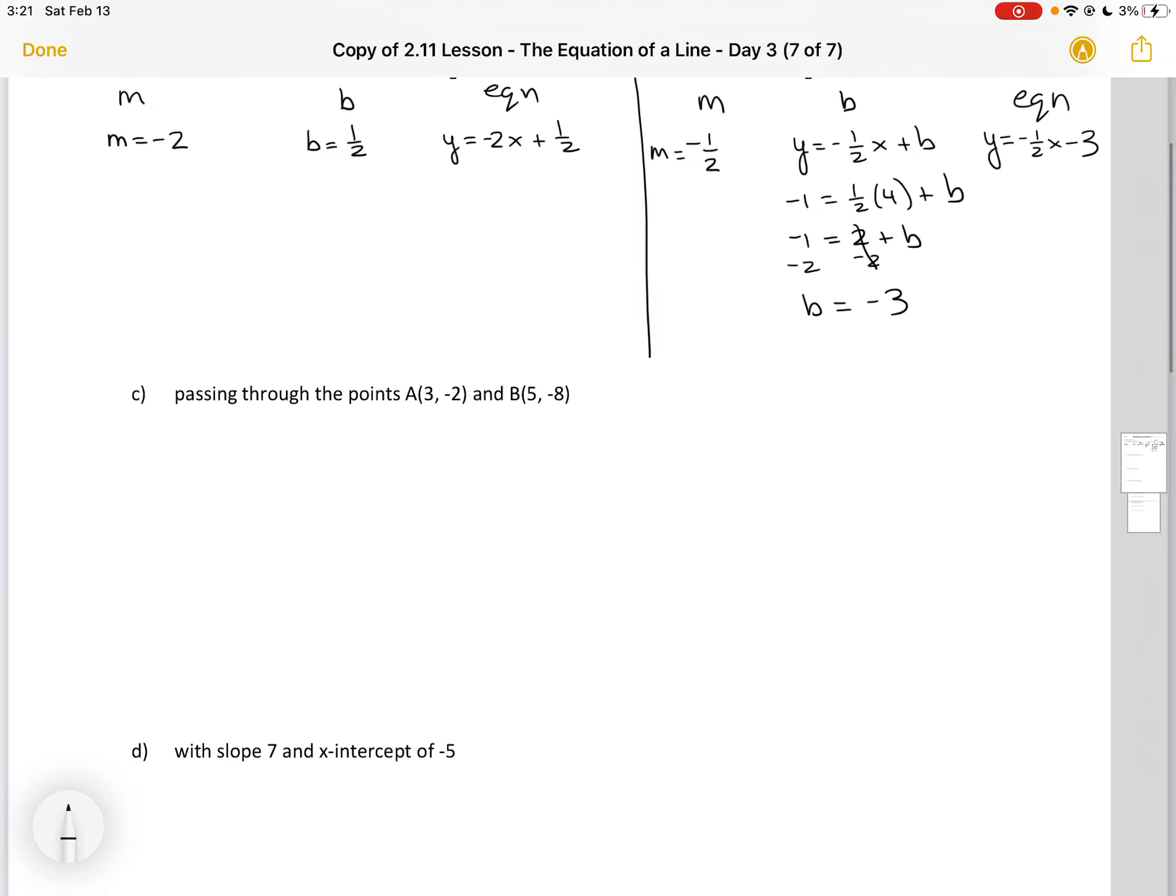Example C is getting a little bit more complicated. I've got two points. What that means is that I have to use my equation. I've got m equals y2 minus y1 over x2 minus x1.